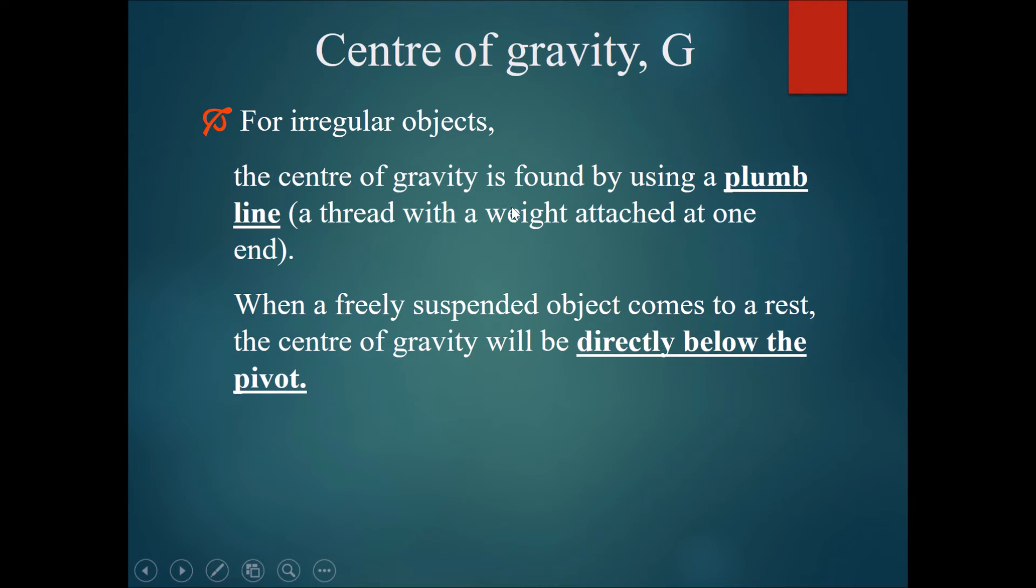The center of gravity is found by using a plumb line, a thread with a weight attached to one end. When a freely suspended object comes to a rest, let's say you're holding something with a piece of paper in one corner, the center of gravity will be directly below the pivot. The center of gravity will always swing such that it ends up directly below the pivot.